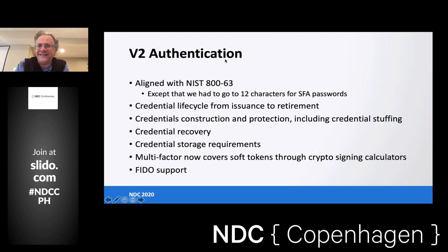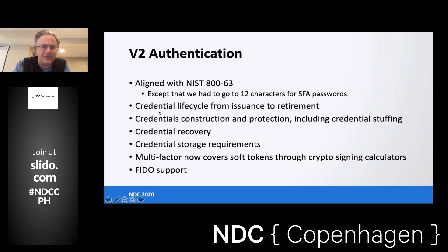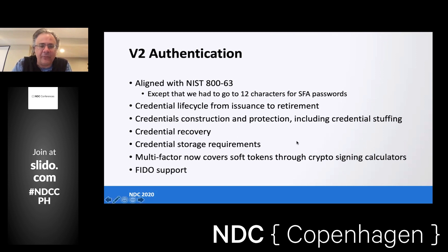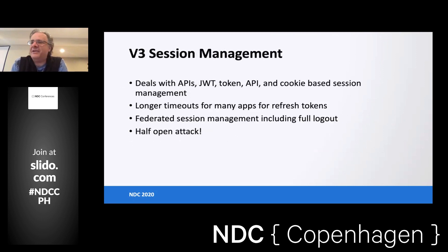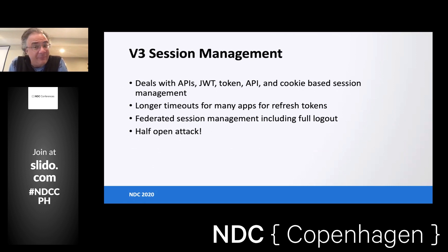Category two is authentication identity. We align this with NIST 800-63, except for passwords — NIST says to use eight-character passwords, but we do 12-character passwords at ASVS. We cover credential lifecycle from issuance to retirement, credential construction and protection, and new attack categories like credential stuffing, how to store a password, FIDO, and multi-factor. Category three is session management. The big change there is we added JWTs — JSON web tokens — which are the main artifact for stateless session management, primarily for stateless APIs.